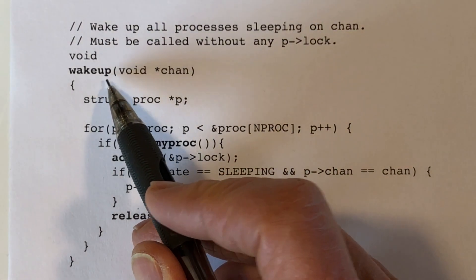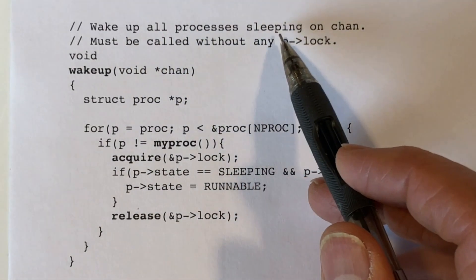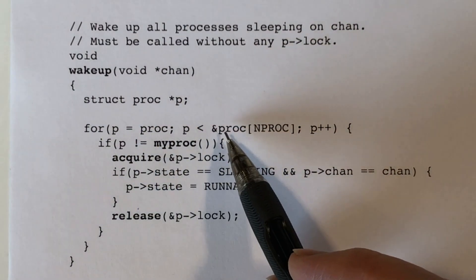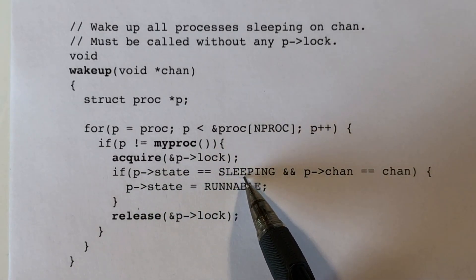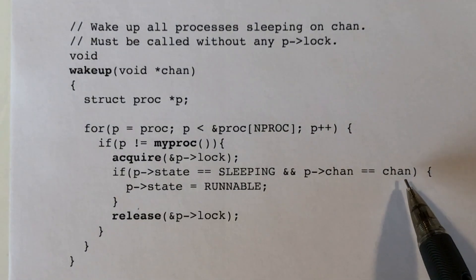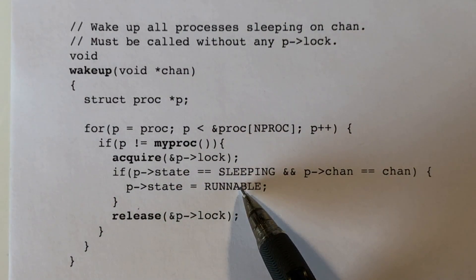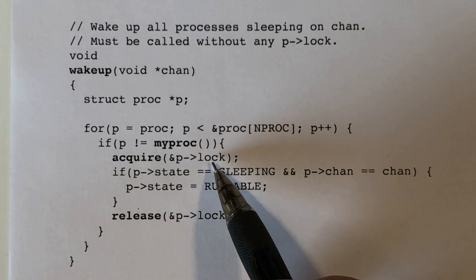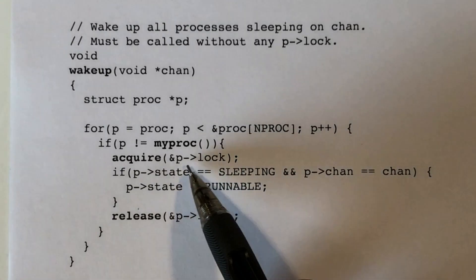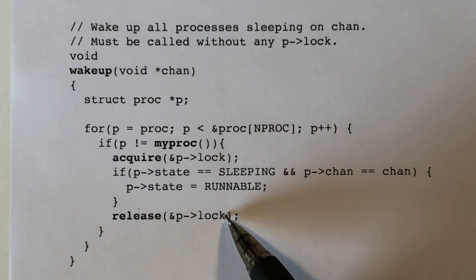The wakeup function is passed a channel and iterates through all processes, waking up any that are sleeping on that channel. It loops through the PROC array one by one, and for each process asks: is its state sleeping, and is its channel field equal to the channel argument? If so, it changes the state to runnable so the scheduler will give it a time slice. The state, channel, and related fields are protected by the process lock, so wakeup acquires and releases the lock for each process.